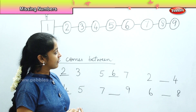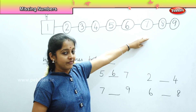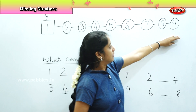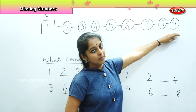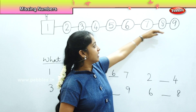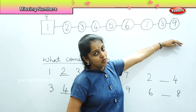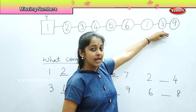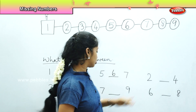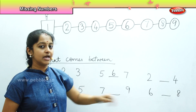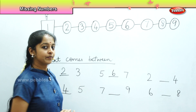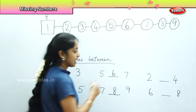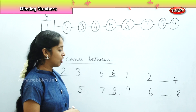Where is number 7? This is bogey number 7. This is bogey number 9. There is one bogey which is in between 7 and 9. Which is that number? Very good, it is number 8. So what will come in between 7 and 9? It will be number 8.